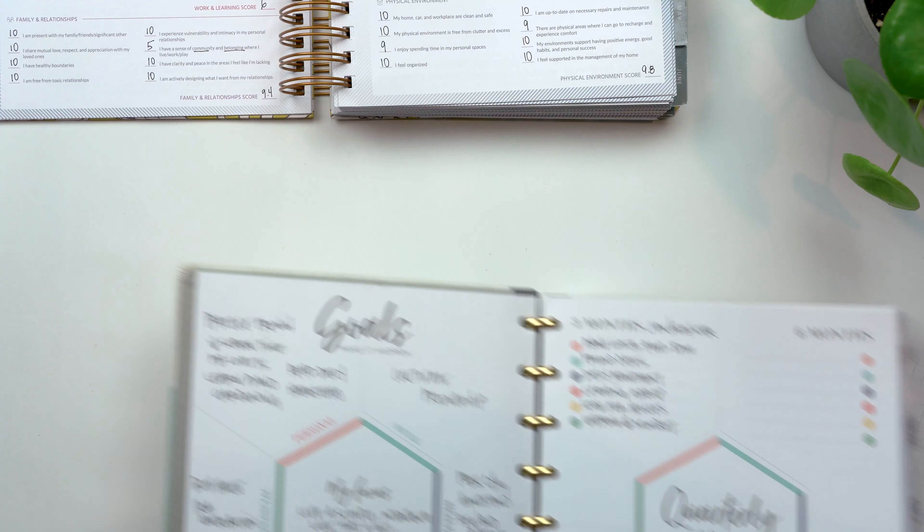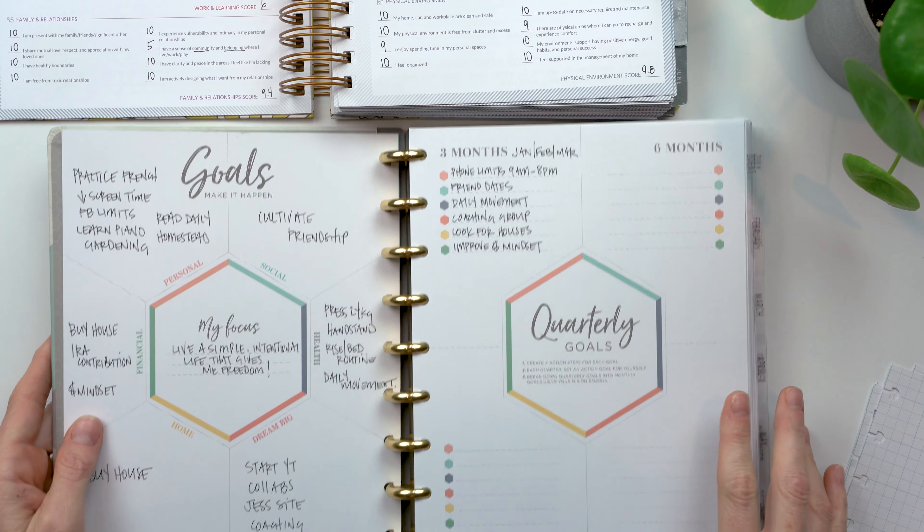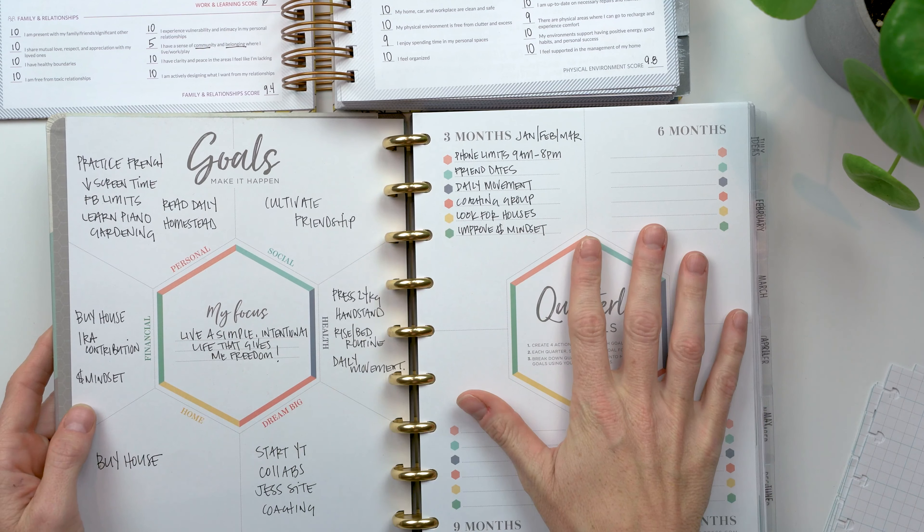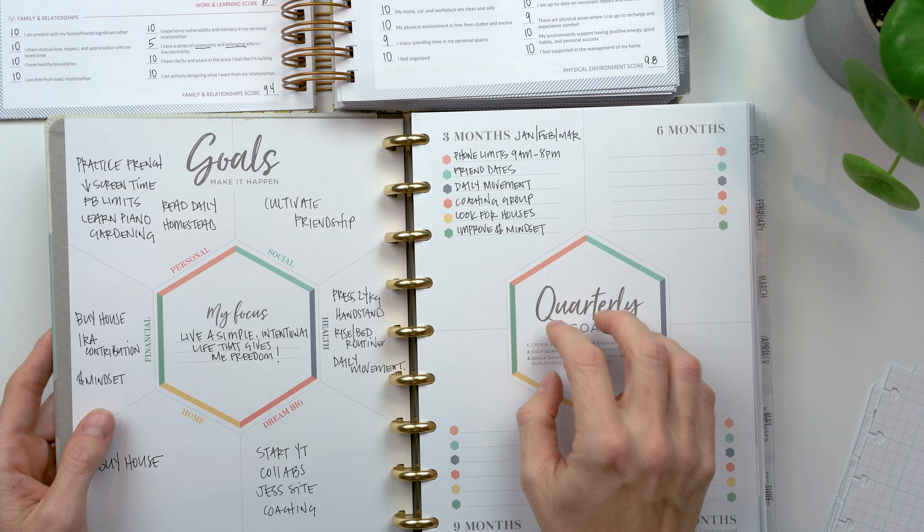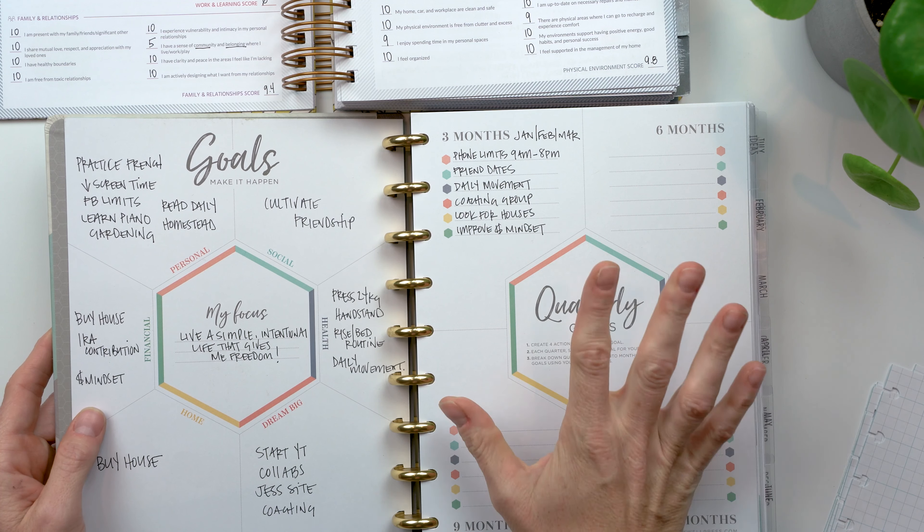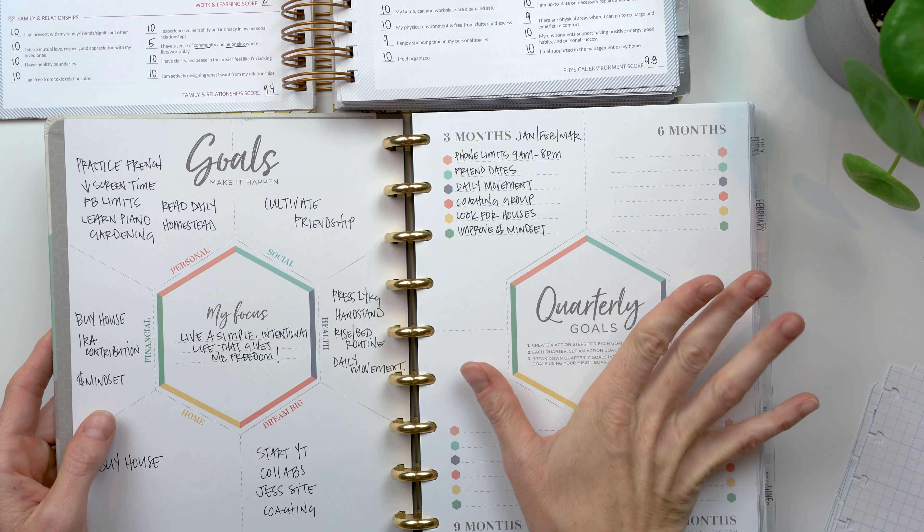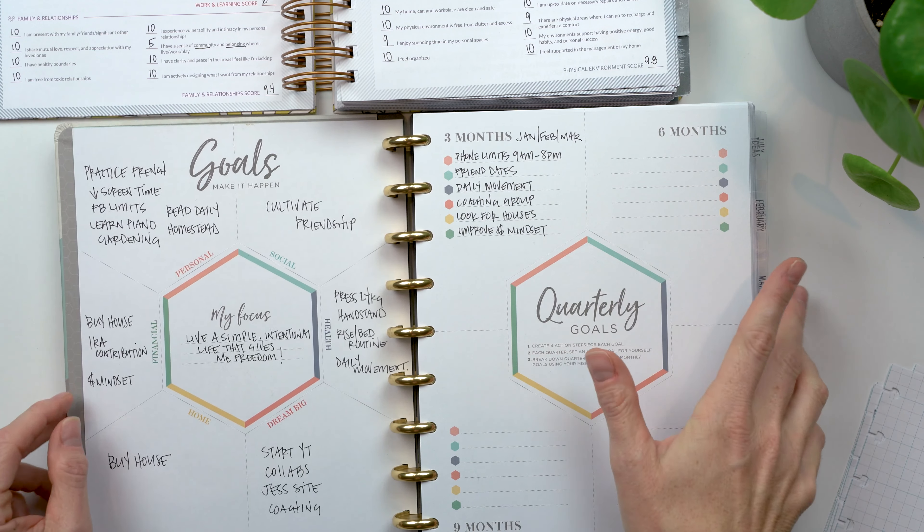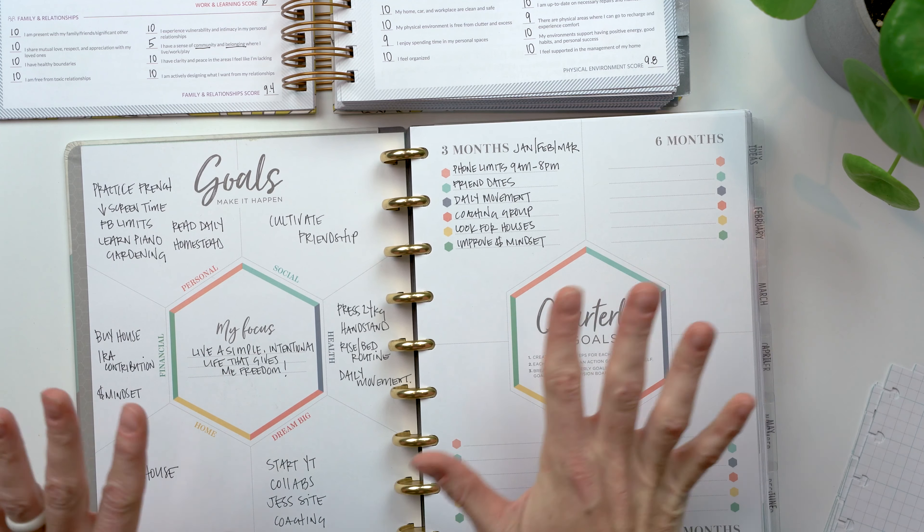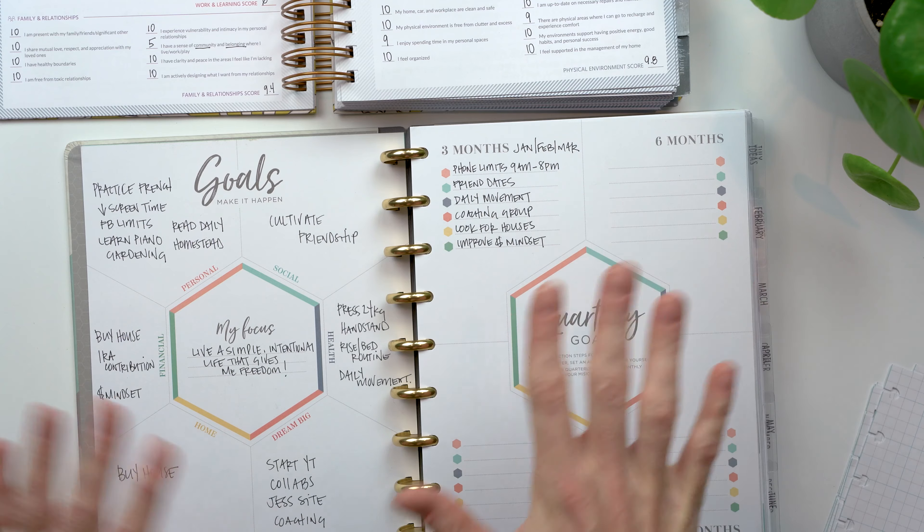Now in the regular old Inkwell, they don't do that. They're not asking you any questions about where you are, how your last year went. I think all of that happens in her goal planner, but that's a separate, completely separate planner. So there's that. So that's first things first, how they differ in that way. Again, we're not comparing the Inkwell Press goal planner.